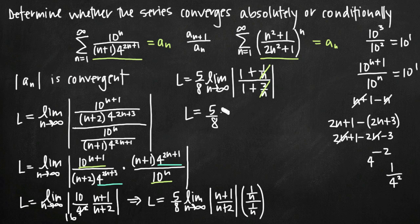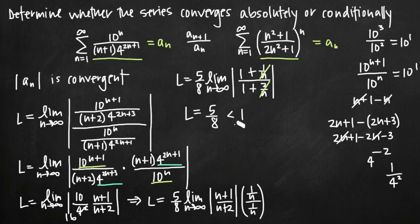The ratio test tells us: if the limit l is less than 1, the series is absolutely convergent; if l equals 1, the test is inconclusive; if l is greater than 1, the series diverges. Since our value of 5/8 is less than 1, by the ratio test this series is absolutely convergent.